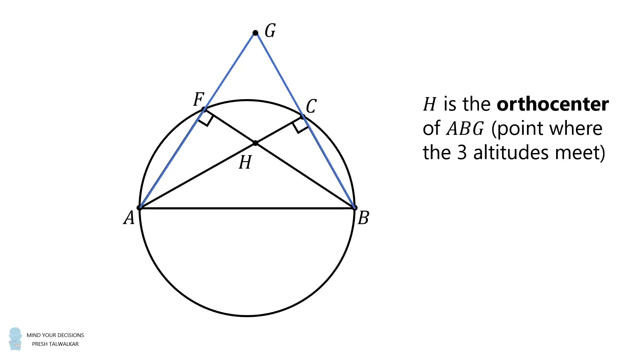An interesting property of the orthocenter is it's actually the unique point where all three altitudes of the triangle meet. Therefore, GH will be along the altitude of AB. So we know that if we extend GH to the side AB, it will meet the side at a right angle.